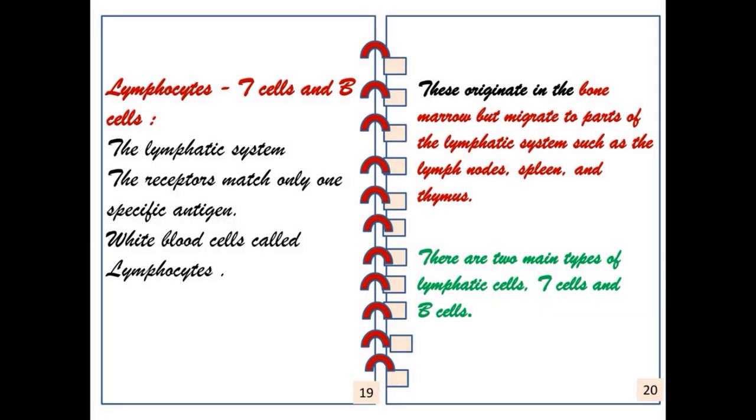Lymphocytes are T cells and B cells. The lymphatic system receptors match only one specific antigen. White blood cells called lymphocytes originate in the bone marrow but migrate to parts of the lymphatic system such as the lymph nodes, spleen, and thymus. These are two types of lymphatic cells: T cells and B cells.